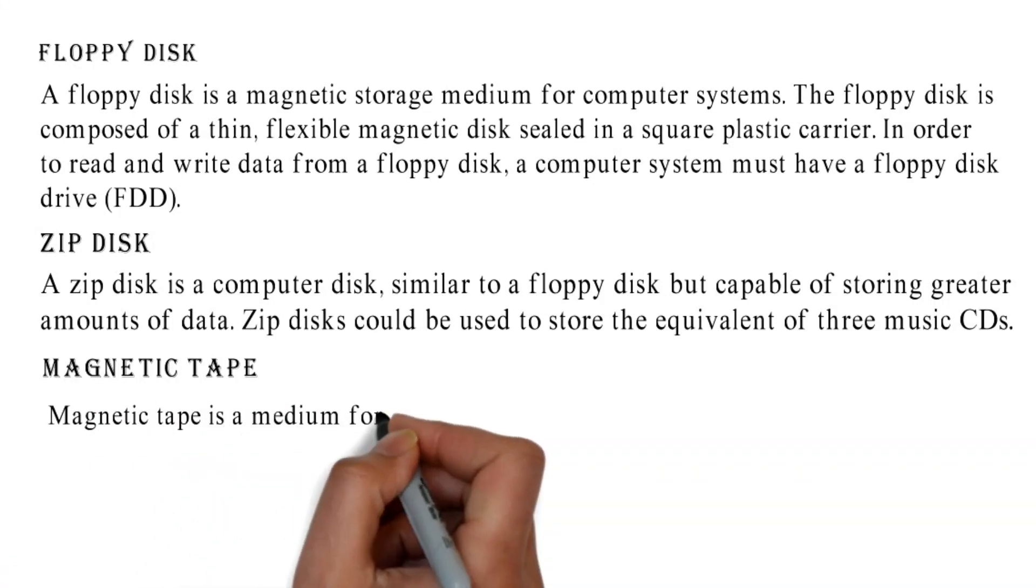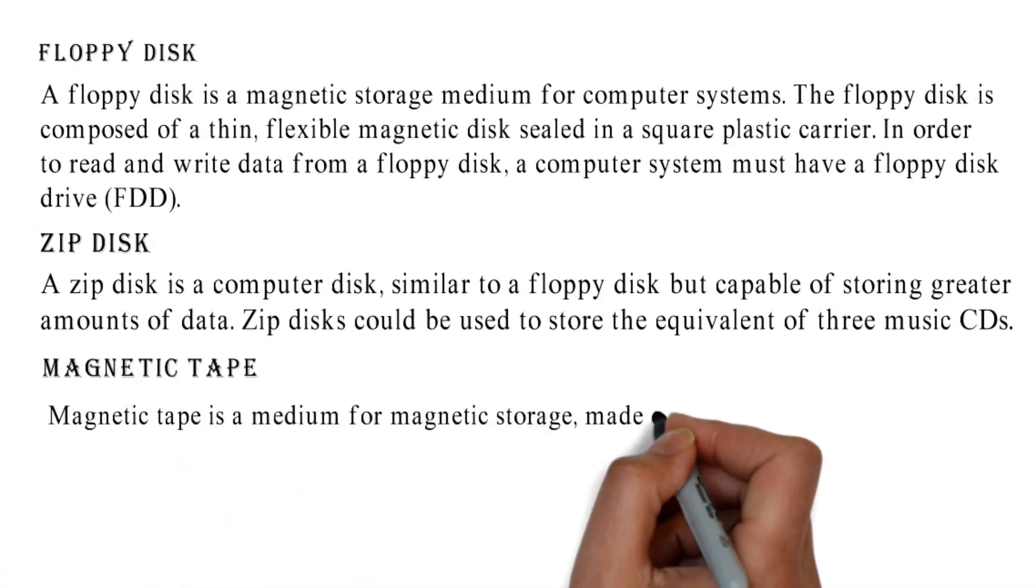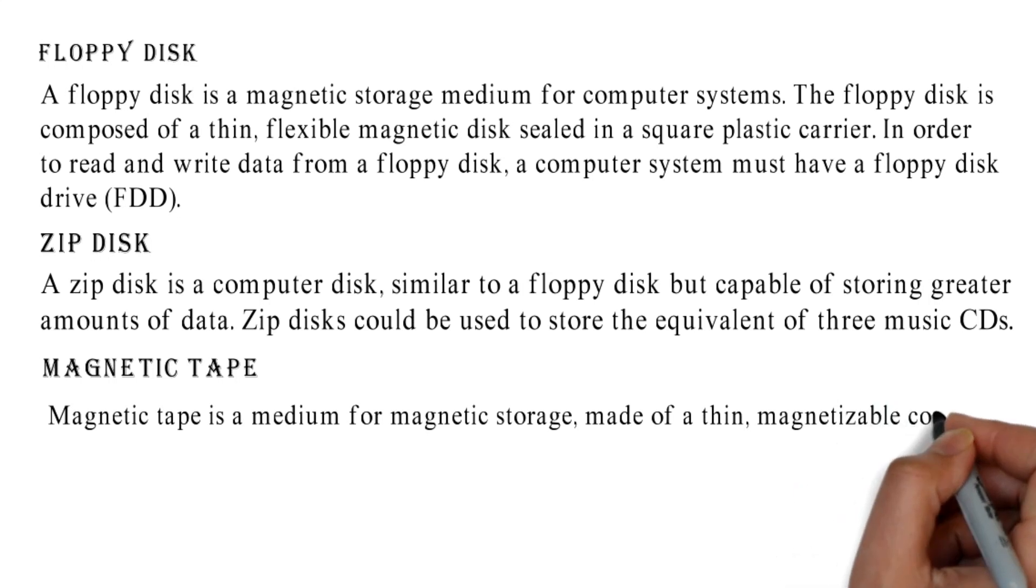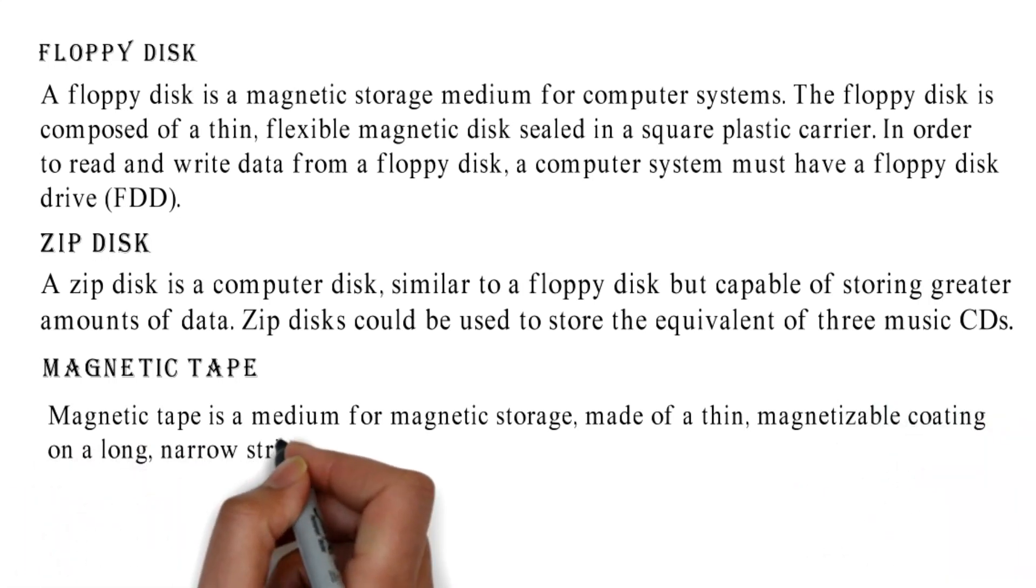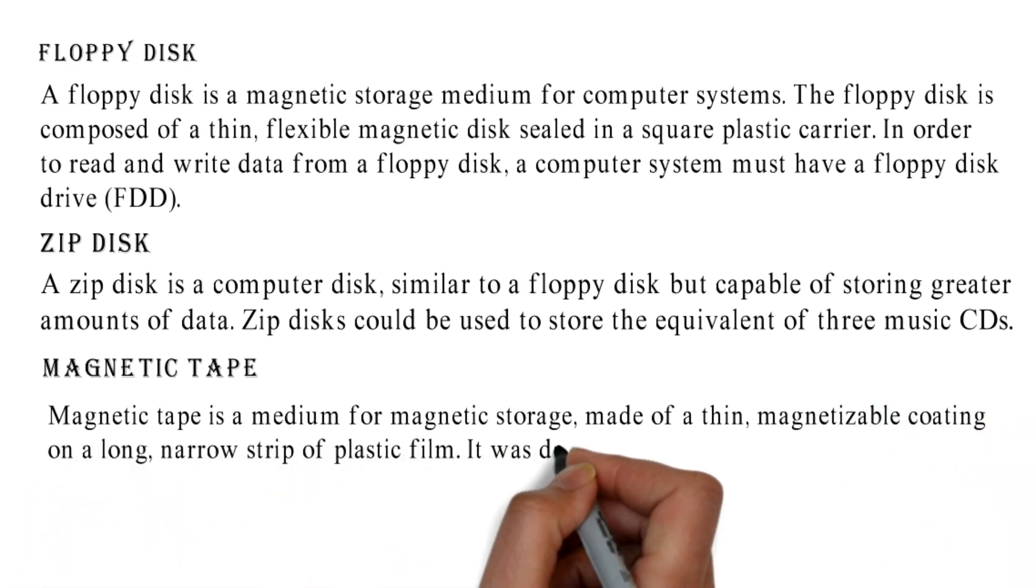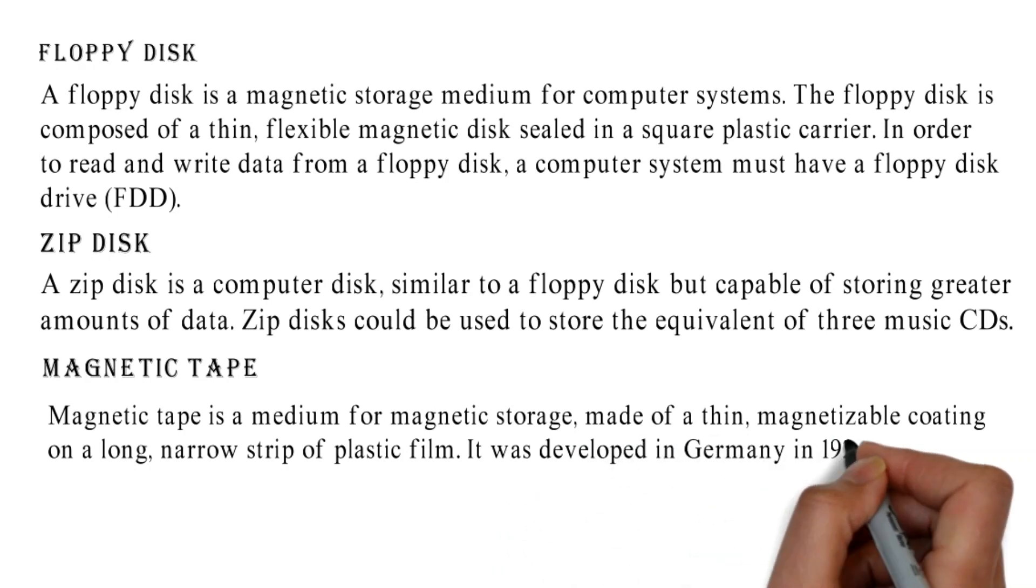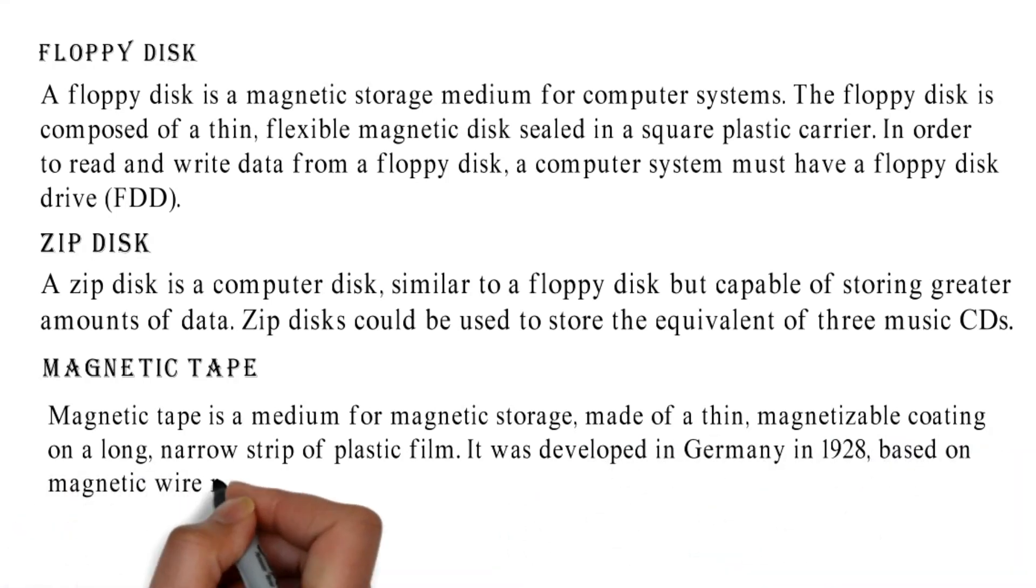Magnetic tape is a medium for magnetic storage, made of a thin, magnetizable coating on a long, narrow strip of plastic film. It was developed in Germany in 1928, based on magnetic wire recording.